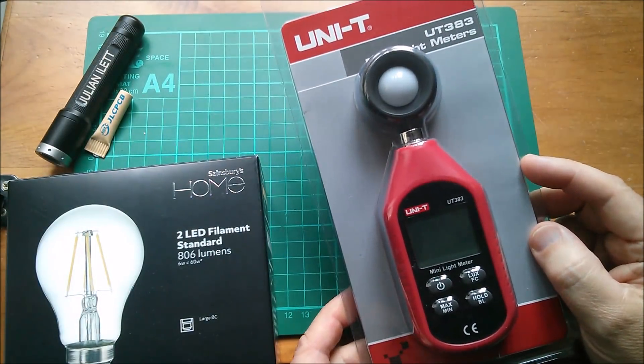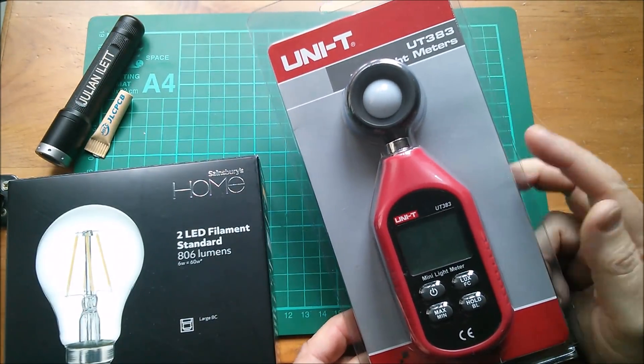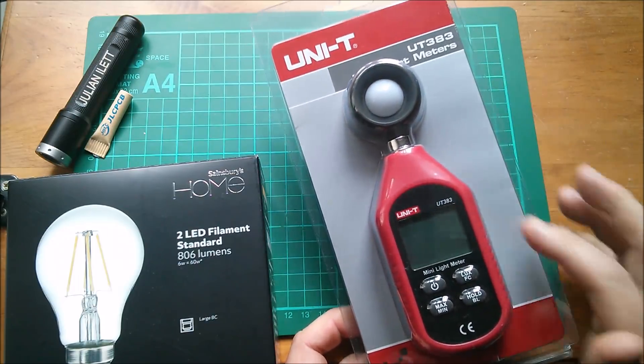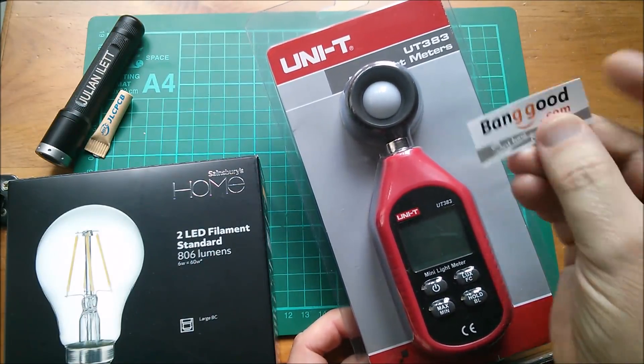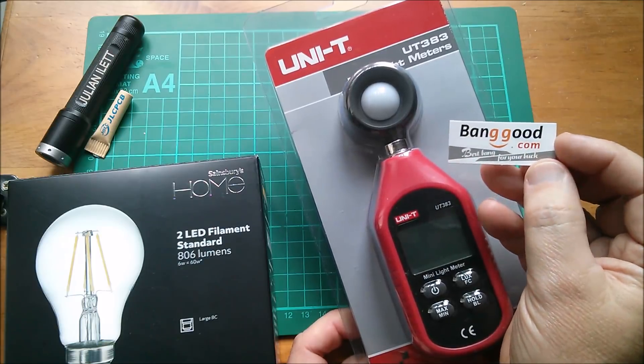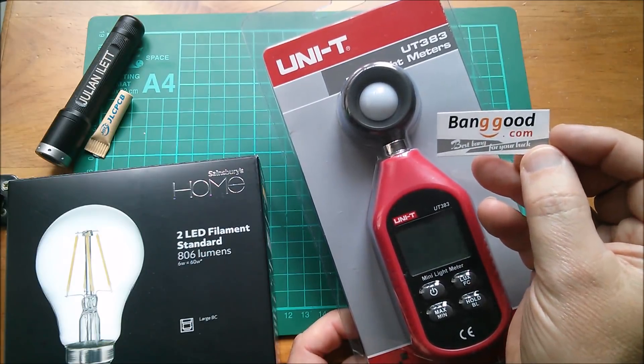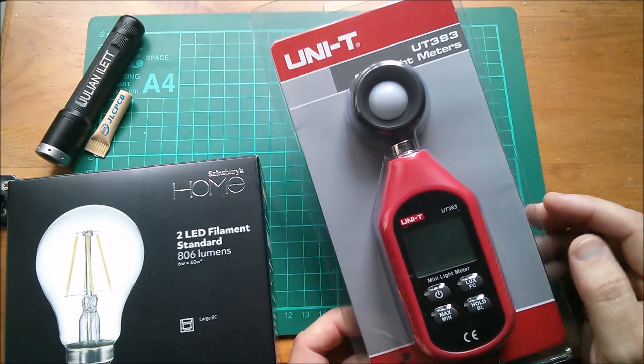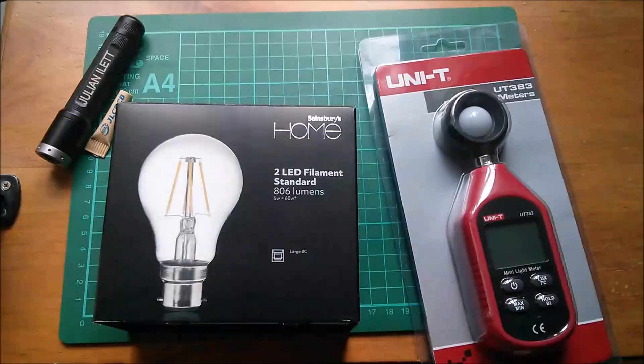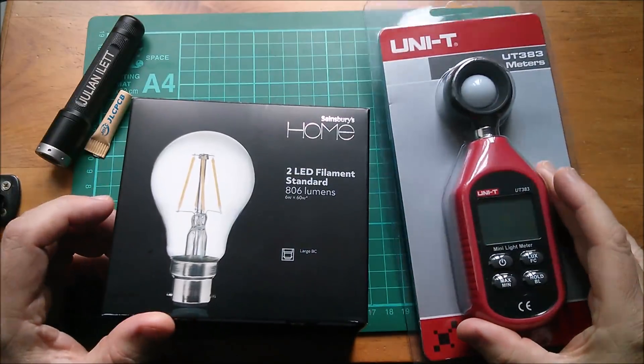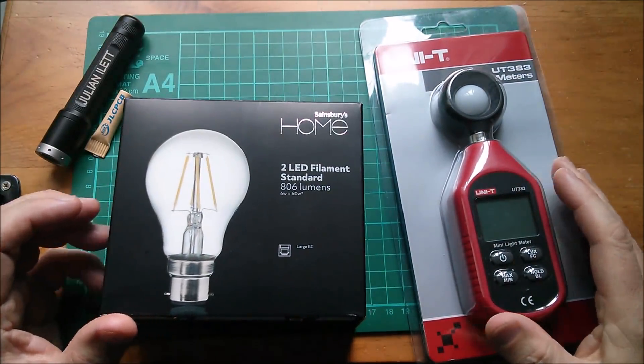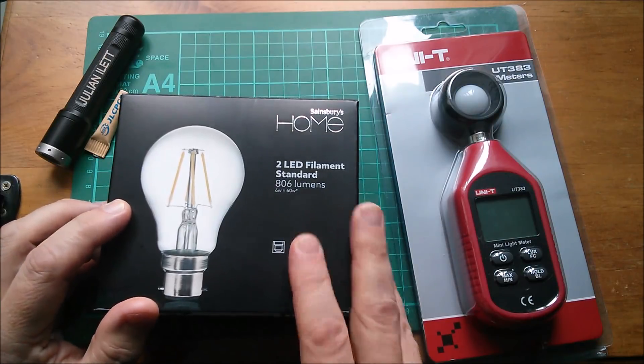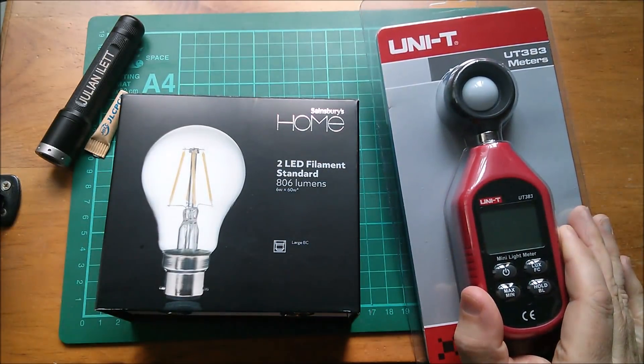And then there's this light meter. It's a mini light meter, Uni-T, the UT383. This one I didn't buy. This was very kindly supplied to me by Banggood.com, so thank you very much. Details about this item will be in the description below. So I think you can probably guess what I'm about to try and do here. Yes, I'm going to measure the brightness of this bulb with this light meter.